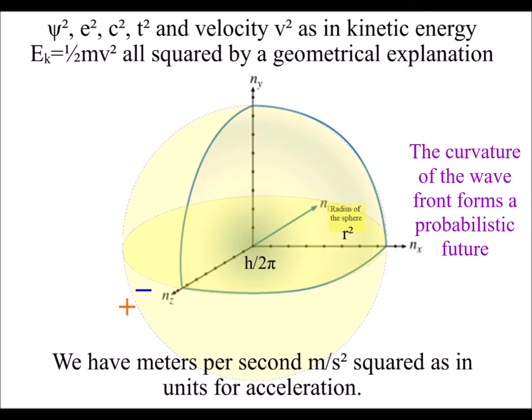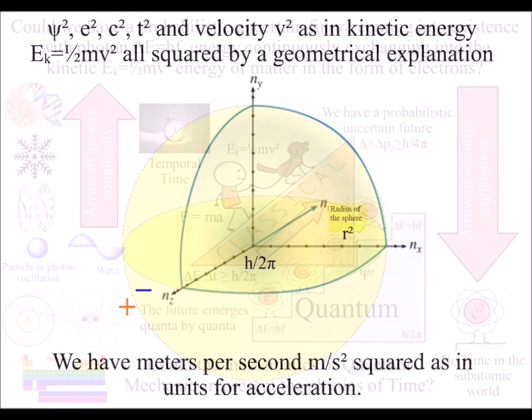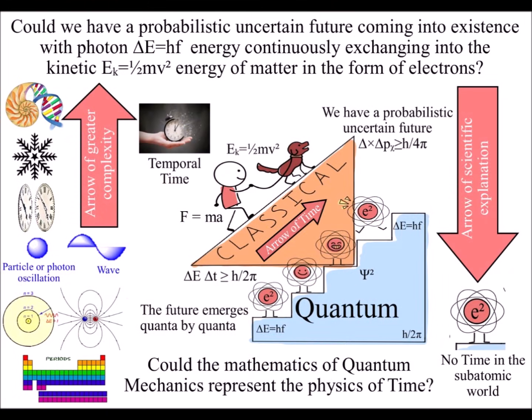Light and matter, in the form of electrons, move as waves, with particle characteristics as a probabilistic future comes into existence, quanta by quanta, moment by moment.